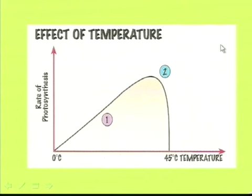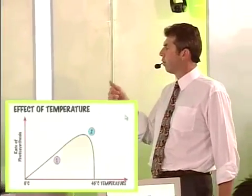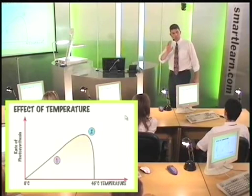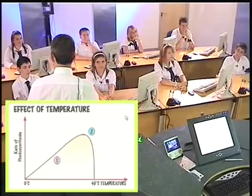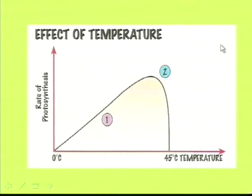Looking at the first graph, temperature is on the x-axis increasing from left to right. We can see exactly what happens as temperature increases: the rate of photosynthesis goes up until a certain point, and then it goes down when it gets too hot. Plants, like us, don't like extreme heat. We can see on the graph that at 45 degrees, photosynthesis begins to stop, and it stops very rapidly — because the plant is dying.